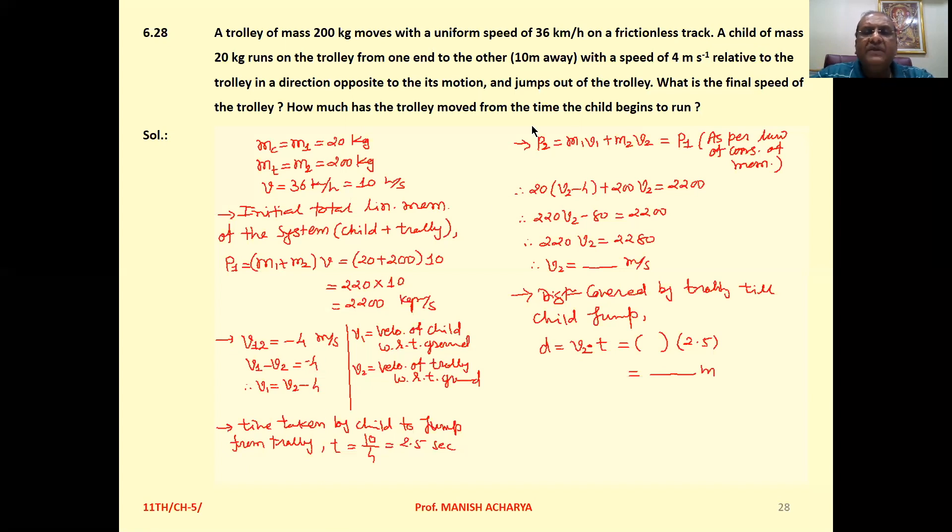The child is running with speed 4 m/s and is 10 meters away. When the child jumps from the trolley, the child covers 10 meters distance.